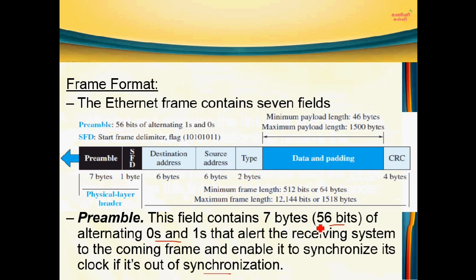An important point is the size. In the physical layer header, the data and padding field has a minimum length of 46 bytes and a maximum of 1500 bytes. The overall minimum frame size is 64 bytes.